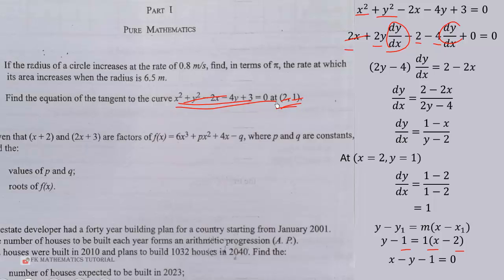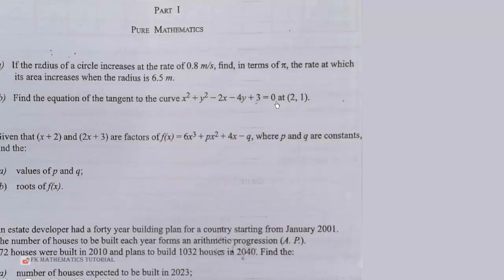Then we proceed to question number 10. Given that (x + 2) and (2x + 3) are factors of f(x) equals 6x cubed plus px squared plus 4x minus q, where p and q are constants, we have to find the values of p and q and the roots of f(x). So let's begin.